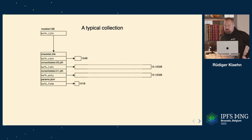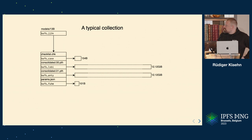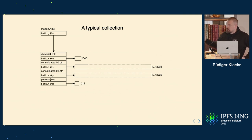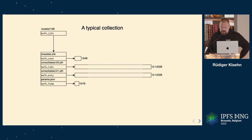This is a typical collection — a machine learning dataset I've been working with. It has some very small files — 100 bytes — and some very large files, 12 gigs. We don't need to split this up into a tree or anything. We just have the collection and the blobs. There are still trees, but they are an implementation detail.